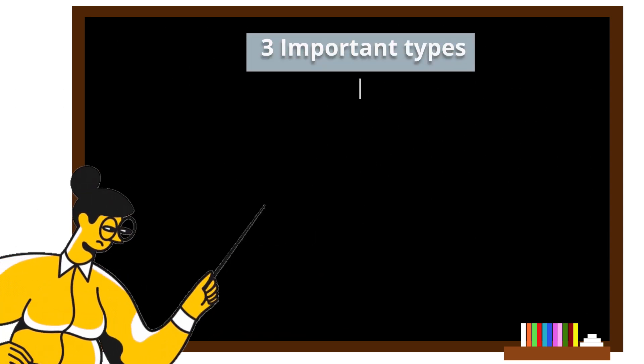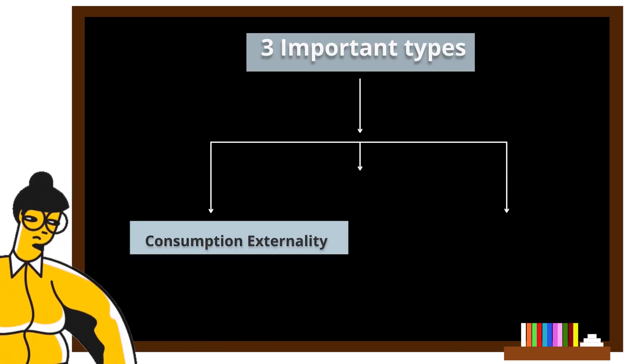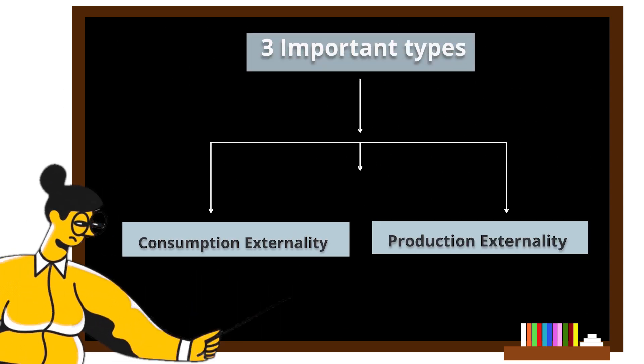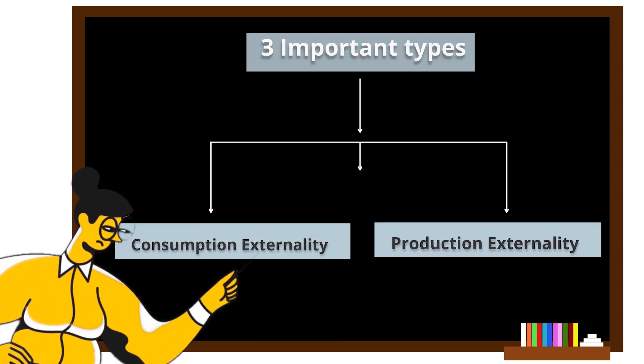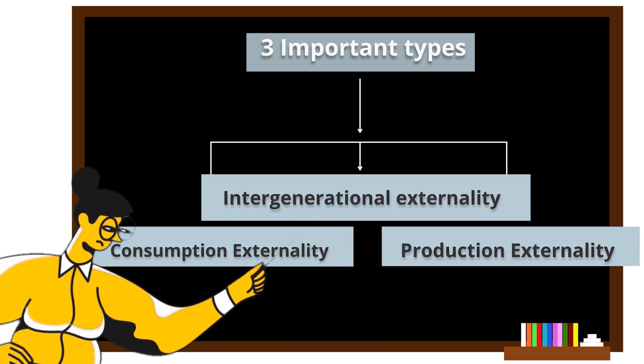Asymmetrical externalities have three important types: the consumption externality, production externality, and intergenerational externality.